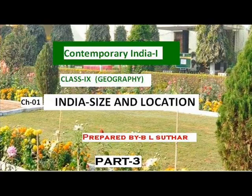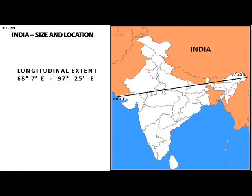Geography class 9, chapter 1: India size and location, part 3. The longitudinal extent of mainland India is about 30 degrees. The westernmost point of India is located in Gujarat, with a longitudinal value of 68 degrees 7 minutes East. The easternmost point of India is in Arunachal Pradesh, with a longitudinal value of 97 degrees 25 minutes East.